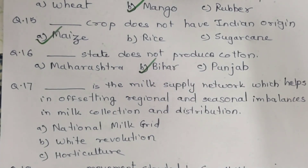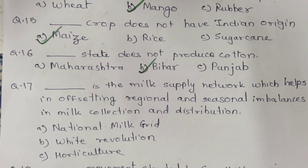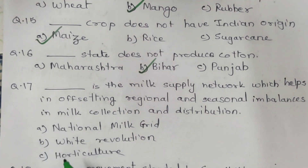Question 17. Which is the milk supply network that helps in offsetting regional and seasonal imbalances in milk collection and distribution? Options are A. National Milk Grid. B. White Revolution. C. Horticulture. And the correct answer is A. National Milk Grid.